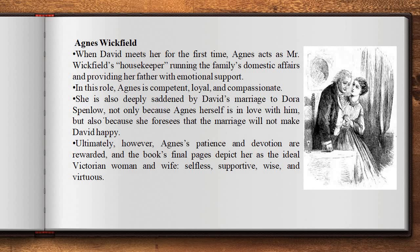How do you compare and contrast the two wives of David Copperfield — Dora and Agnes? Agnes Wickfield, when David meets her for the first time, acts as Mr. Wickfield's housekeeper, running the family's domestic affairs and providing her father with emotional support. In this role, Agnes is competent, loyal, and compassionate. She is also deeply saddened by David's marriage to Dora Spenlow — not only because Agnes herself is in love with him, but also because she foresees that the marriage will not make David happy. Ultimately, Agnes' patience and devotion are rewarded, and the book's final pages depict her as the ideal Victorian woman and wife: selfless, supportive, wise, and virtuous.